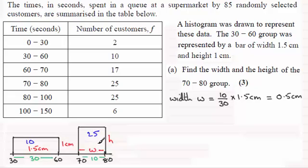So therefore the area of this bar given by W times H must be 2.5 times the area of this particular bar.